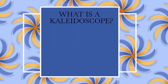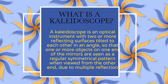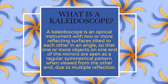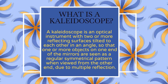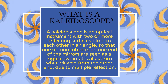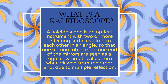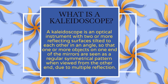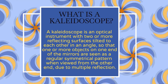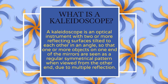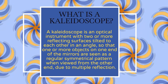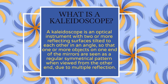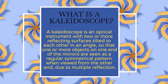A kaleidoscope is an optical instrument with two or more reflecting surfaces tilted to each other at an angle so that one or more objects on one end of the mirrors are seen as a regular symmetrical pattern when viewed from the other end, due to multiple reflection.